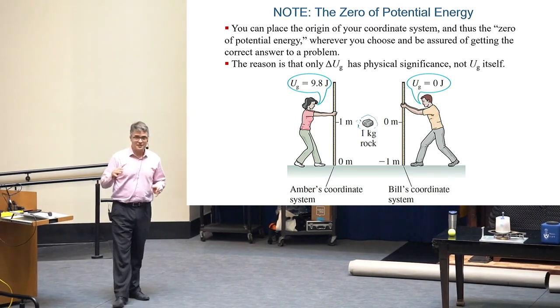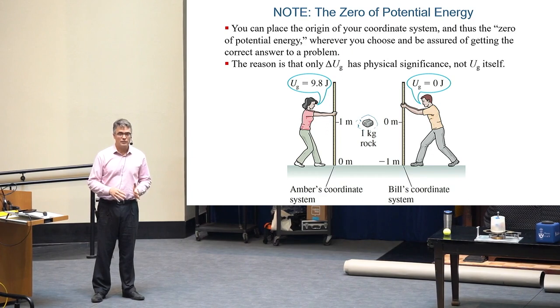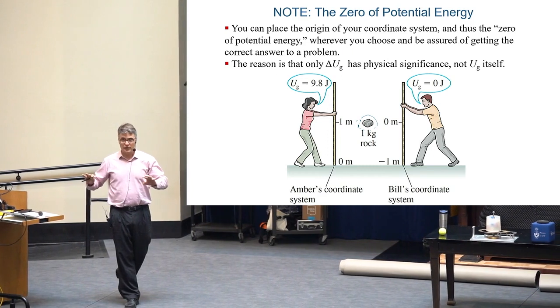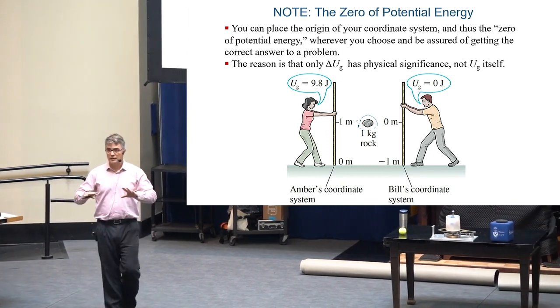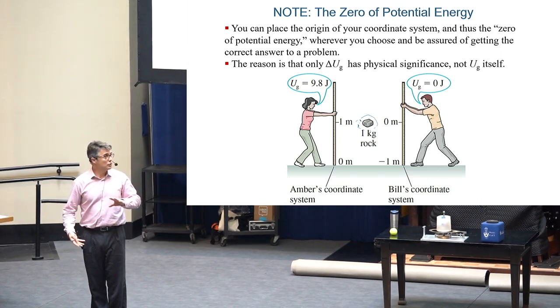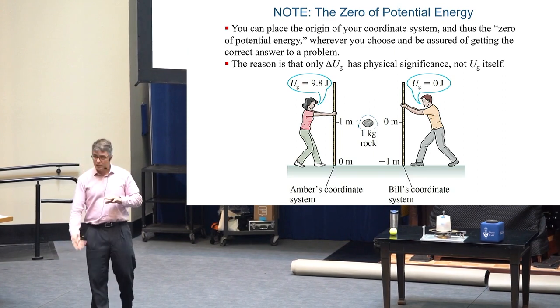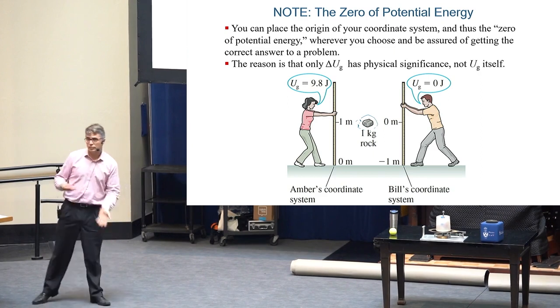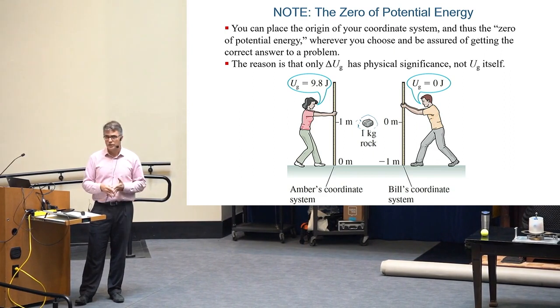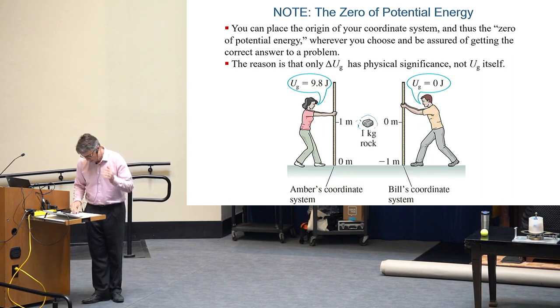It might pick up 9.8 joules of kinetic energy on the way down. So Bill has this strange idea that zero is up here. I don't know why, but he defined it to be that way. So he would say this rock has zero potential energy. And he's correct the way he has defined his coordinate system. And the way it works is that if it goes down to the floor, then Bill will say it now has negative 9.8 joules of potential energy down at the floor. So it will have lost 9.8. And so it could pick up 9.8 joules of kinetic energy and still have zero energy when it's down at the floor.